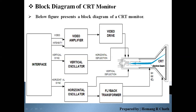Here is the control grid — G1, G2, G3. That is the control grid. This control grid is used to control the flow of electrons.